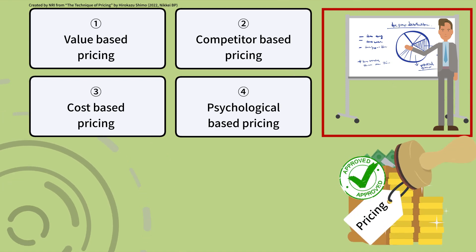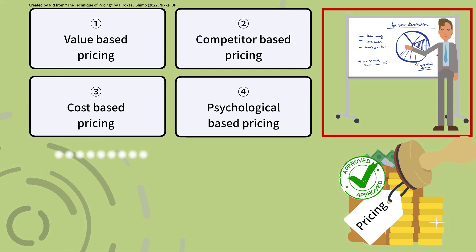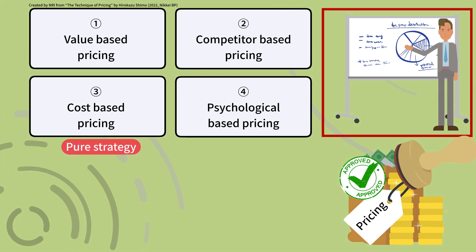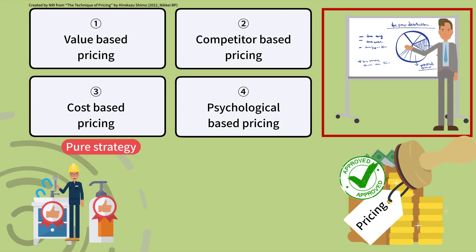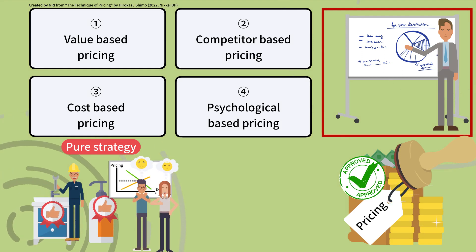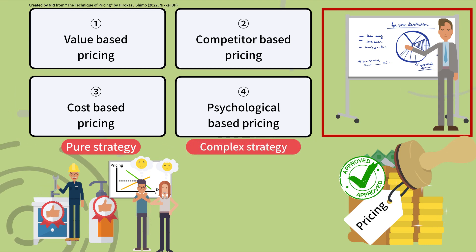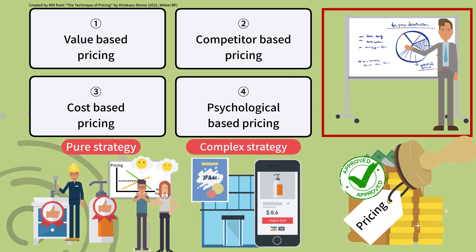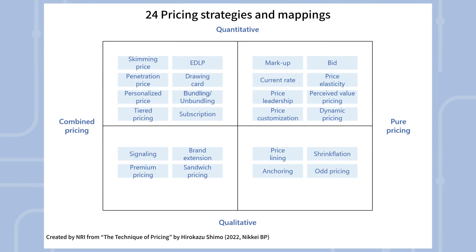Pricing strategies can be broadly divided into two types. One is a pure strategy to determine the price level of a product or service itself, or to show prices by using consumer sentiment. The other is a complex strategy that is closely related to branding or devising sales methods. Each can also be further divided into quantitative and qualitative approaches, totaling 24 strategies.